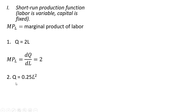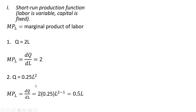Here we have a nonlinear production function: output equals 0.25 times L squared. The marginal product of labor is again a derivative. Taking the derivative, the 2 comes down in front, so it's 2 times 0.25, and then we subtract 1 from the exponent — following the rules of differentiation — leaving us with 0.5L.